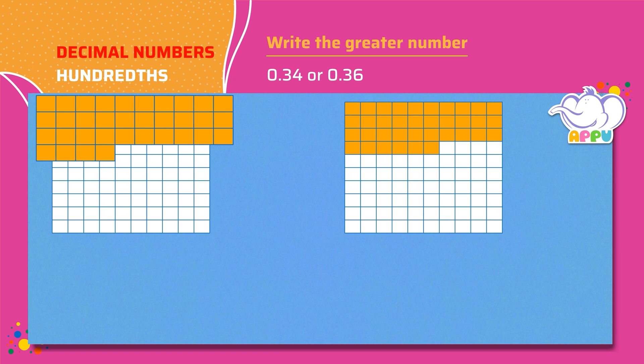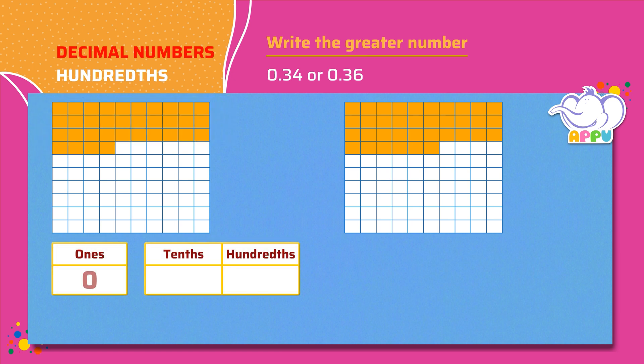34 squares are shaded out of 100 squares. We write 3 in the tenths place and 4 in the hundredths place. This is equal to 0.34.